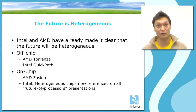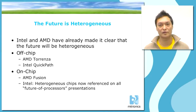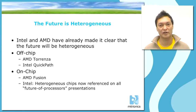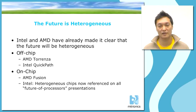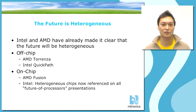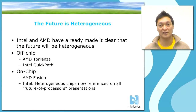This has of course been noticed by large chip manufacturers such as Intel and AMD, and they have made it clear that the future will be heterogeneous. For off-chip heterogeneous computing, AMD launched the Torrenza program and Intel recently launched the QuickPath program. Both of these give accelerators access to system bus integration, meaning accelerators now have direct access to system memory and can communicate with other CPUs or accelerators on a peer-to-peer basis, giving accelerators and CPUs equal footing on the system bus.